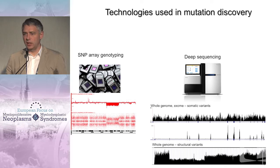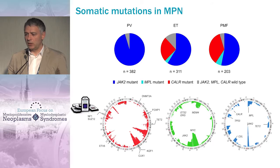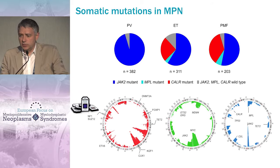In my lab we initially used SNP arrays extensively — today we have almost 1,500 karyotypes done by this technology. Slowly we are moving towards next-generation sequencing. Exome sequencing was used, as you heard before, but now the cost of whole genome sequencing is going down, and transcriptome sequencing is also being increasingly used. These are the two technologies I will be mentioning in this talk.